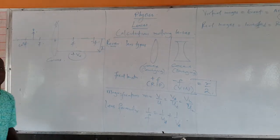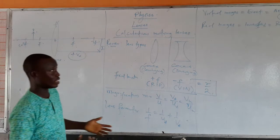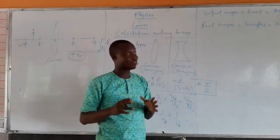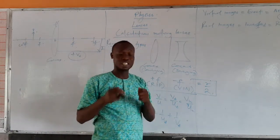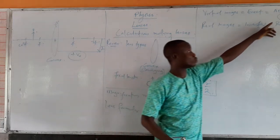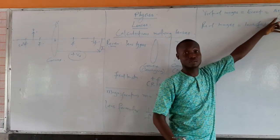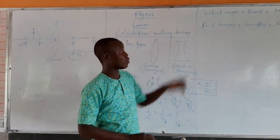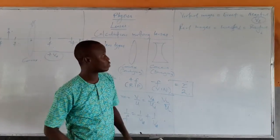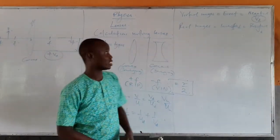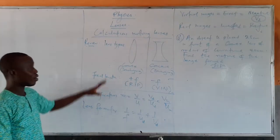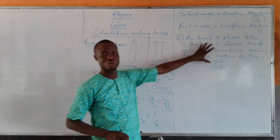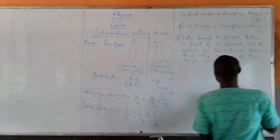To summarize: any time we are dealing with a virtual image, or it is stated that the image is erect and we are given the image position, we take the image position to be negative. If we are given a real image and told it is inverted, we take the image position to be positive. This knowledge can be used to solve the question we have here.